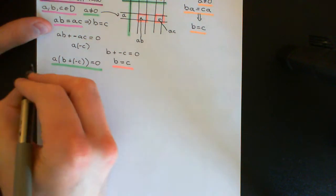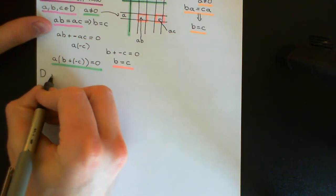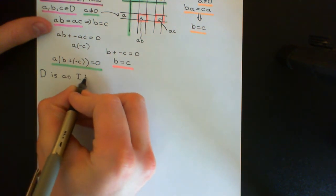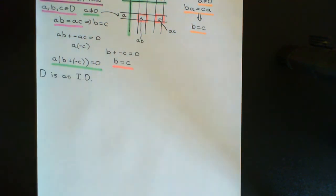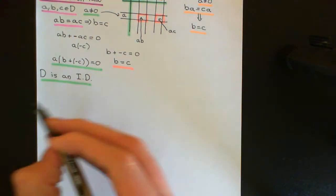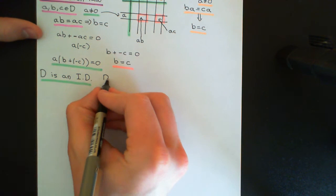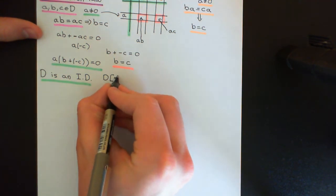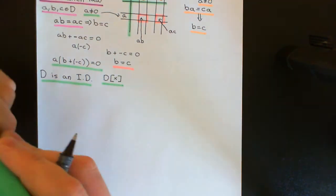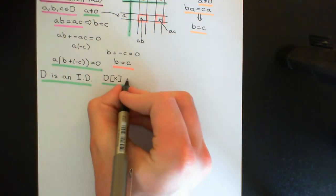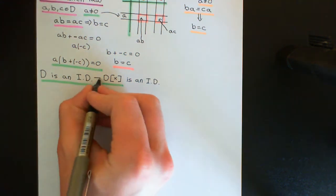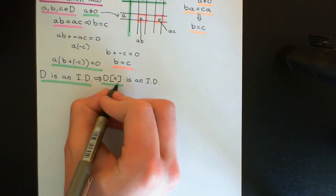Let me write this out. Let's say D is our integral domain — I'll abbreviate integral domain to ID. Then my claim is that if we generate the polynomial ring with coefficients in that integral domain, so D adjoin x, written D[x], this is also an integral domain. So D being an integral domain implies D[x] is an integral domain as well.